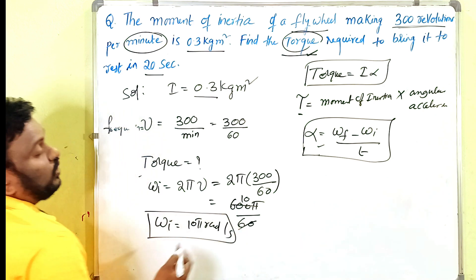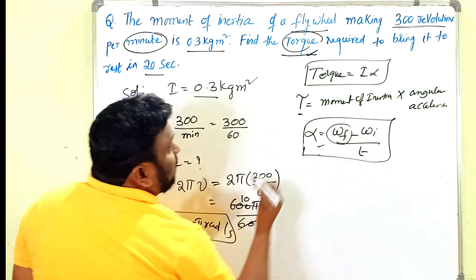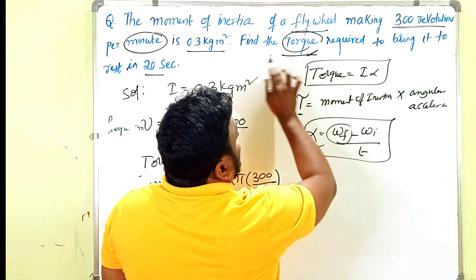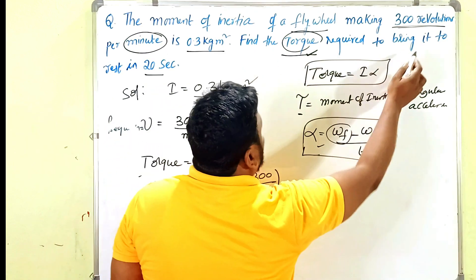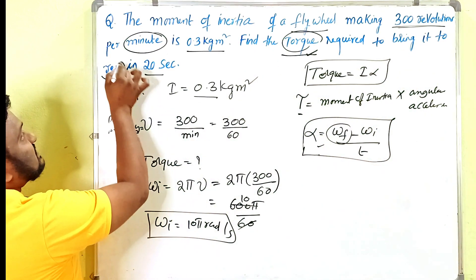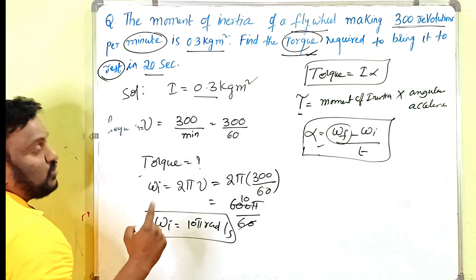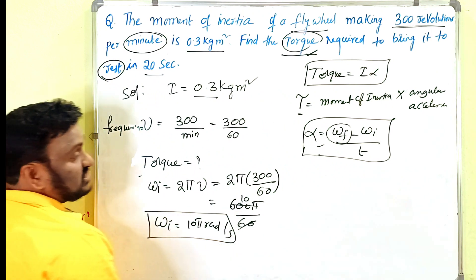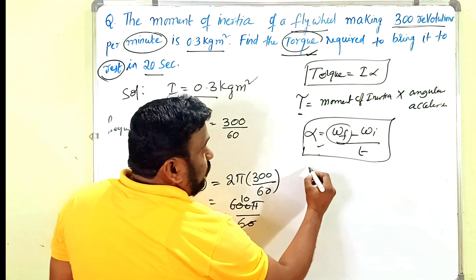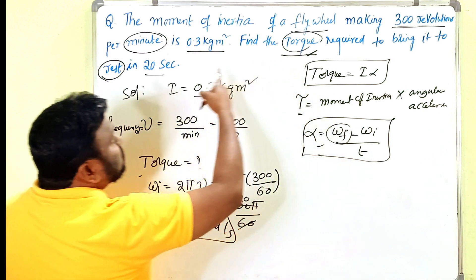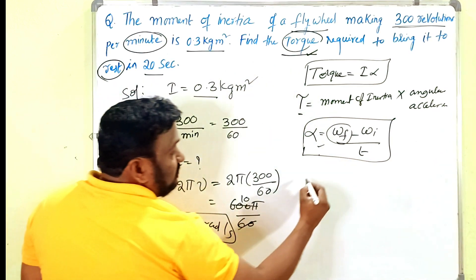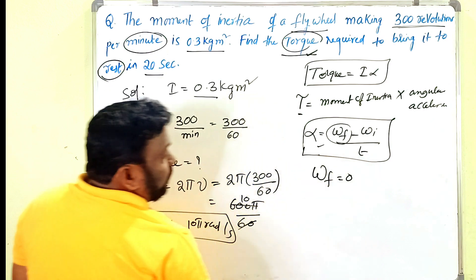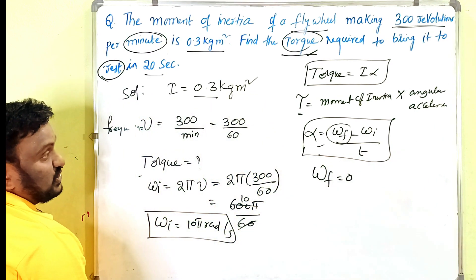Now for ω_f: the problem says we need to bring the flywheel to rest. Rest means the final angular velocity is zero, so ω_f = 0.